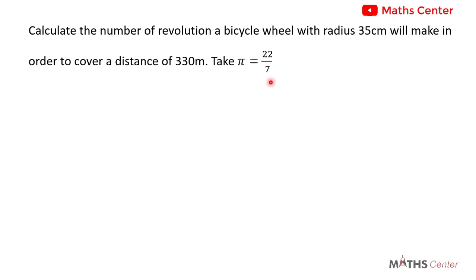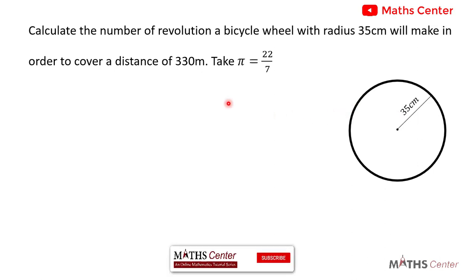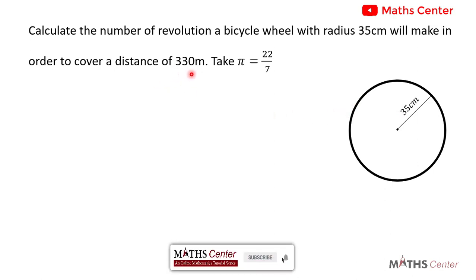The wheel of a bicycle is circular, so let's assume that this is the wheel of the bicycle. The wheel has a radius of 35 centimeters, meaning a line drawn from the center of the wheel to a point on the circumference will be 35 centimeters. We need to calculate the number of revolutions the wheel will have to make in order to cover a distance of 330 meters.